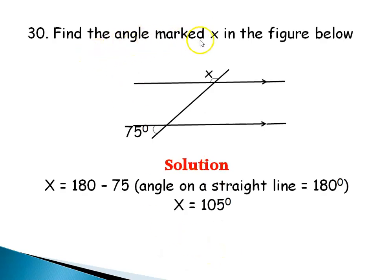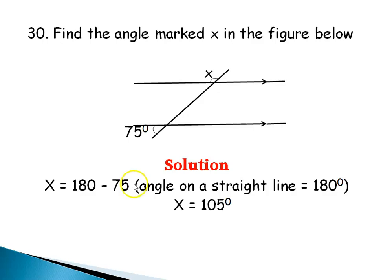Question 30: Find the angle marked X in the figure below. If one angle is 75 degrees, the corresponding angle is also 75 degrees. Then 75 plus X equals 180 because these are angles on a straight line. So X equals 180 minus 75, which is 105 degrees.